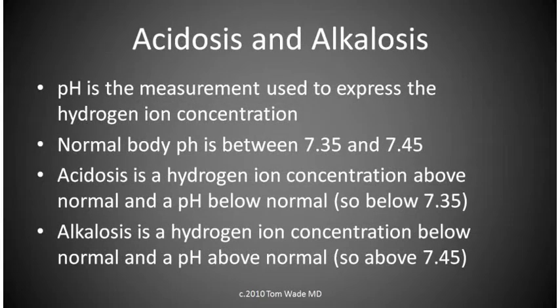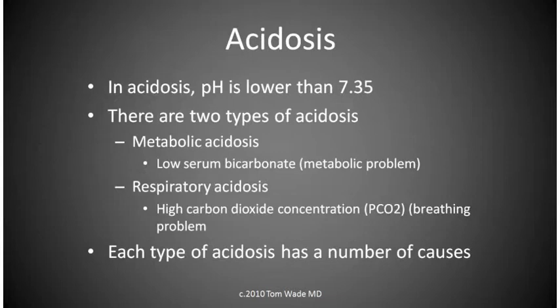pH is the measurement used to express the hydrogen ion concentration. The normal body pH is between 7.35 and 7.45. In acidosis, the pH is lower than 7.35.